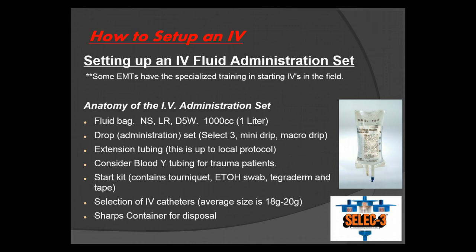You're going to have a selection of IV catheters. For adults, your average size is 18 to 20 gauge. For geriatric and pediatric patients you may use 22 or 24 gauge. For trauma patients you'll use larger gauges — 14 and 16 gauge. Always be aware of the type of patient you have as well as your partner's preference. Also make sure your sharps container is readily available for sharps disposal.